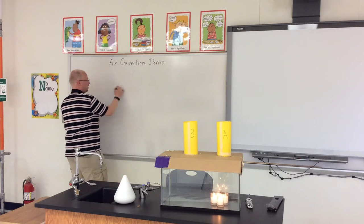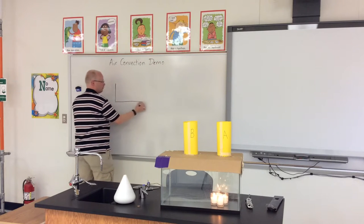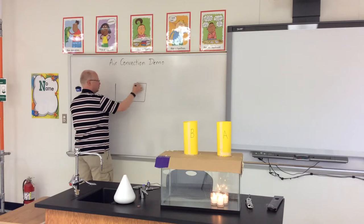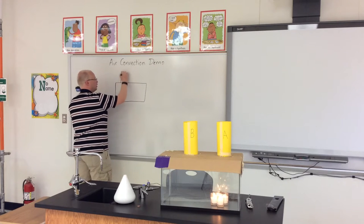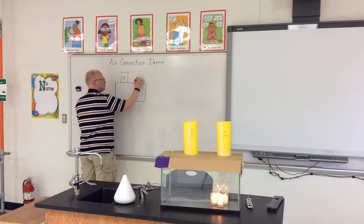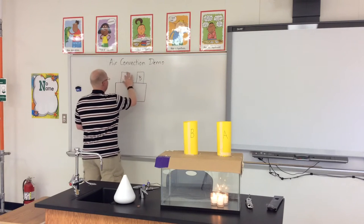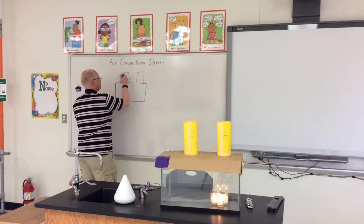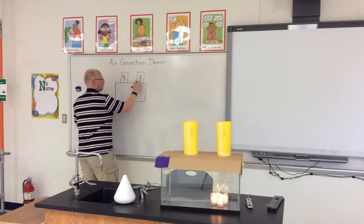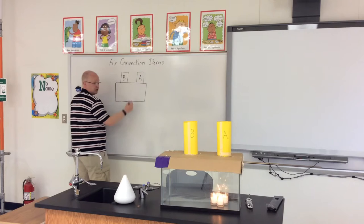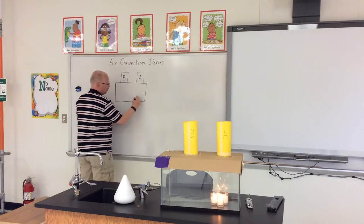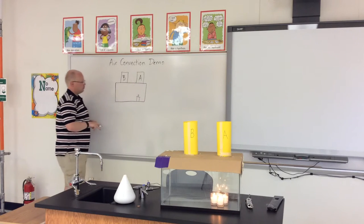We'll just do a little rough sketch of the box — it doesn't have to be pretty. We've got chimney B and chimney A. Actually, I need to reverse that — chimney B and chimney A. There we go, that way it matches what you're seeing. Underneath chimney A, we've got the candles, so I'll just draw one quick little candle flame there.